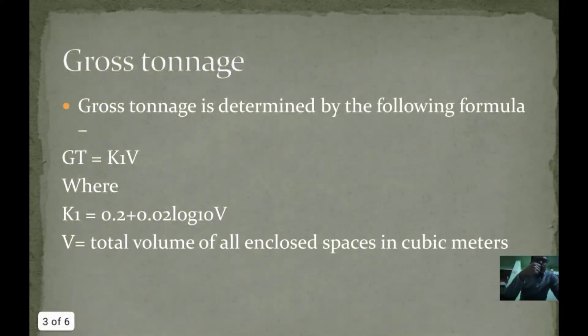Let us see what is the formula to find gross tonnage. Gross tonnage is equal to K1 into V, where K1 is equal to 0.2 plus 0.02 log10 V, where V is the total volume of all enclosed spaces in cubic meters.